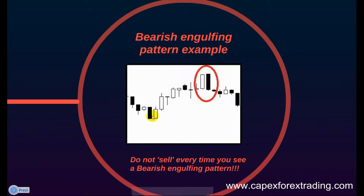In terms of our example, you can see that we have an uptrend in the market here. The appearance of this white candle suggests at that point that the uptrend is still strong. However, the appearance of the black candle and the formation of the bearish engulfing pattern suggests that the current uptrend is running out of steam and the market reverses in the downwards direction.